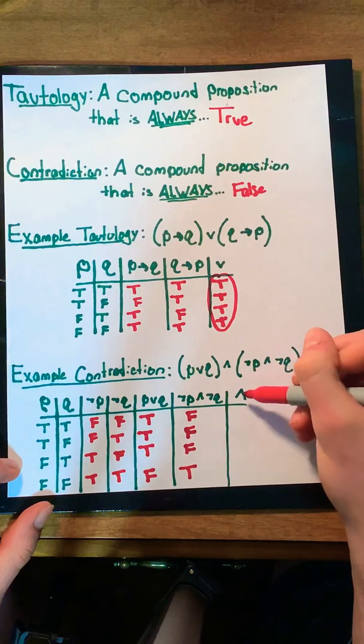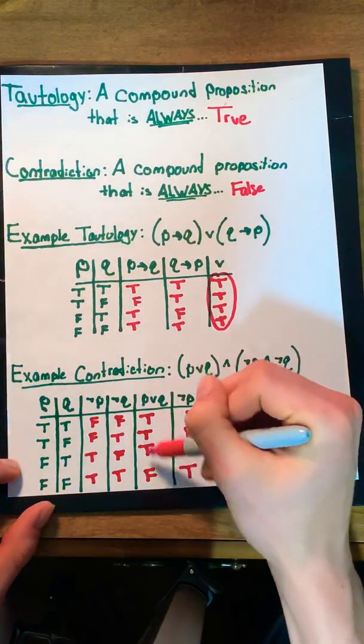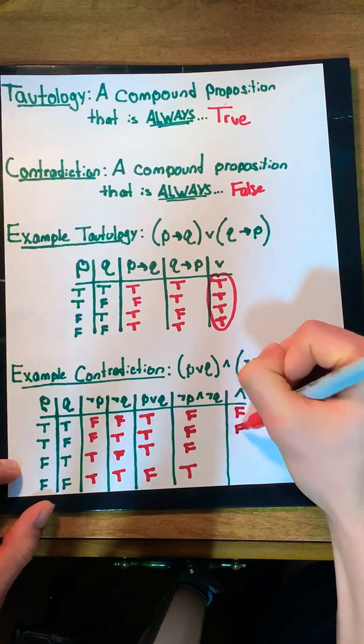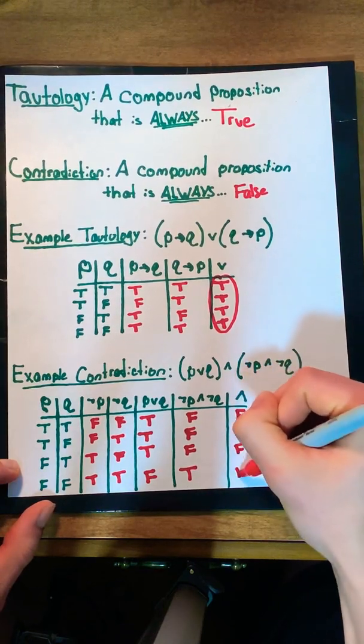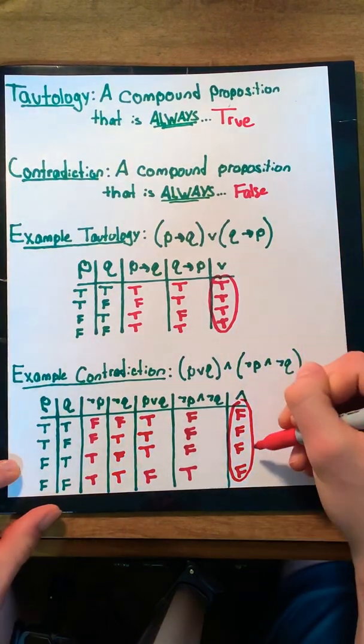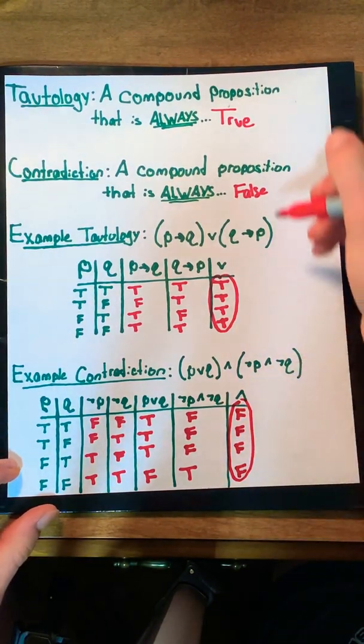So now, when we do an and statement to combine these two statements, we end up getting false, false, false, false. No matter what, the statement is false, which matches our definition of a contradiction.